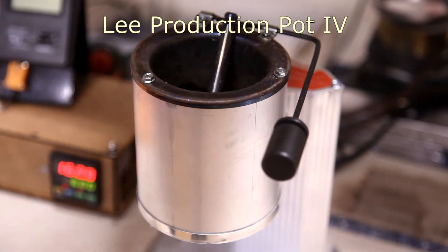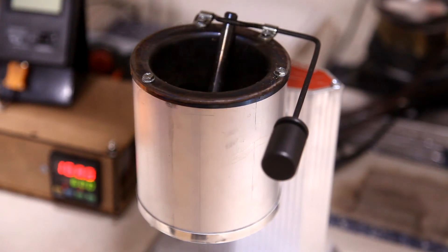To melt the processed pewter, I'll be using this Lee production pot. The Lee manual strictly states not to melt pewter in their melting pot, so do that at your own risk.